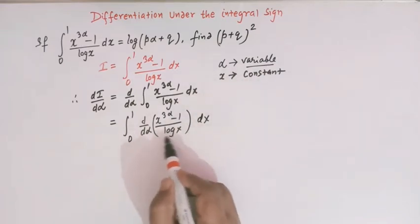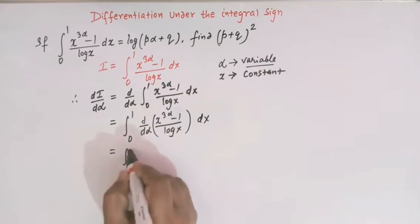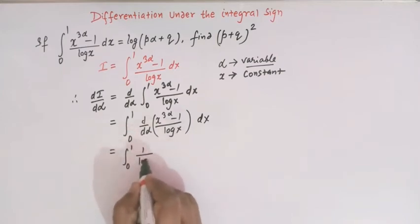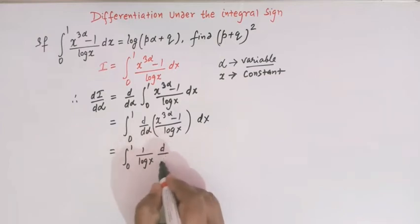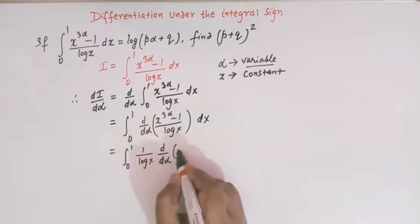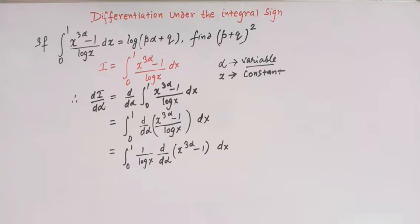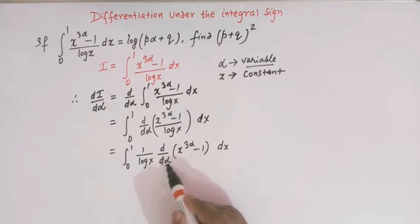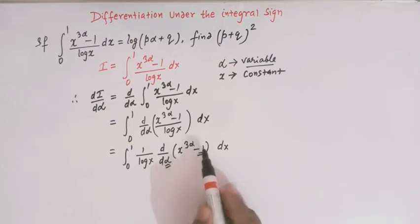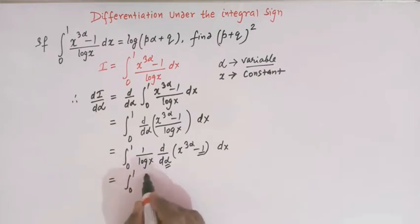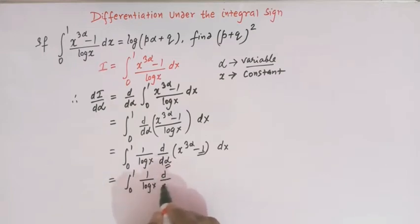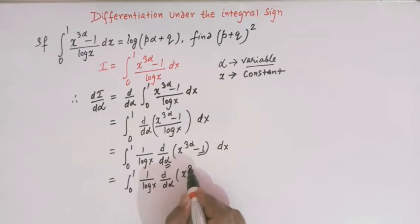Since we are treating α as the variable and x as the constant, log x is taken as a constant and can be moved outside. So we have 1 over log x times d/dα of (x raised to 3α minus 1) dx. Since 1 is a constant, its derivative is 0, leaving us with 1 over log x times d/dα of x raised to 3α.